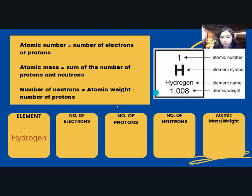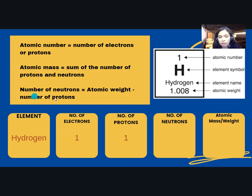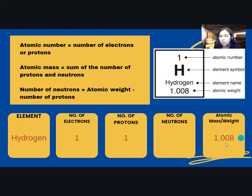Hydrogen element. We can identify the number of electrons by looking at the atomic number. So the number of electrons is just the atomic number. In this example, the number of electrons is 1 and the number of protons is 1 as well. Next is the number of neutrons. We can get the number of neutrons by subtracting the number of protons from its atomic weight. The atomic weight is already given — we can get it from the periodic table. In this example, the atomic mass or weight of hydrogen is 1.008. So we subtract the number of protons from the atomic mass: 1.008 minus 1 equals 0.008. So that is the number of neutrons.